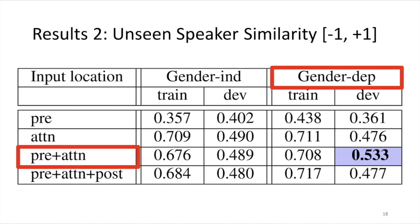For additional results, we look at gender-dependent versus independent training and also input locations. The metric is cosine similarity, ranging from negative one to one, with higher values meaning more similar. We extract X-vectors from the original speech and from the synthesized speech of the same target speaker, then measure similarity — we want the synthetic speech to be as similar as possible to the original. Looking at the dev set speakers, which are totally separate from the training set, we find that the best speaker similarity for unseen speakers comes from gender-dependent training with pre-net and attention as the input location for the speaker embedding.